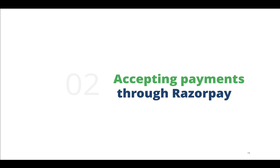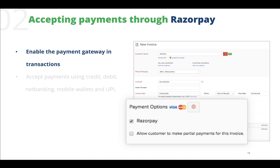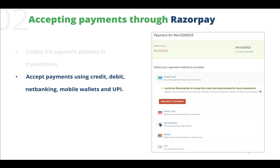Now that we have set up the payment gateway, let us see how to accept payments using it. The first step to accepting payments is enabling the payment gateway while creating invoices. You will have to check the RazorPay box to enable this gateway. By enabling the RazorPay gateway, customers will be able to pay using credit card, debit card, net banking, mobile wallets, or UPI. All these payments will be validated and kept secure using this gateway. Here we can see how the client portal looks when a customer chooses to pay online — all payments are secured by RazorPay.